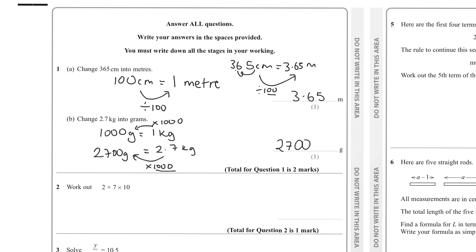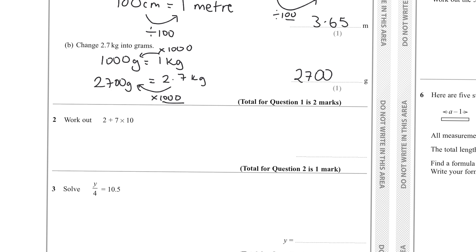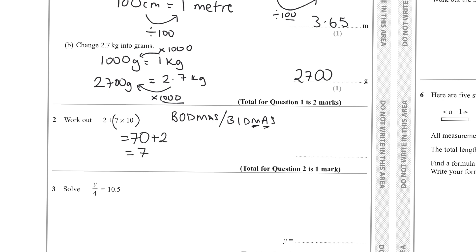Question two says work out 2 plus 7 times 10. This uses BODMAS, or BIDMAS as some call it. Even though we see addition before multiplication, the M in BIDMAS stands for multiplication, so we multiply first. 7 times 10 is 70, then we add 2 to get 72.